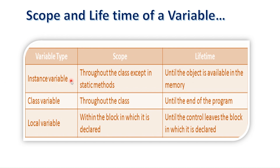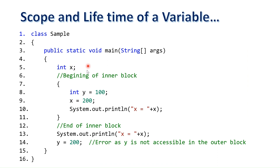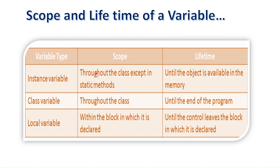There are three types of variables: instance variable, class variable, and local variable. If you declare a variable inside a class, it is called an instance variable. If you declare a variable using the static keyword, it is called a class variable. If you declare a variable within a method, it is called a local variable. The current example uses a local variable declared inside a method or block.